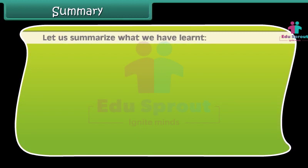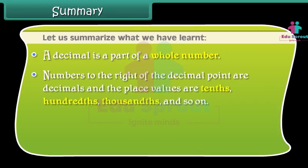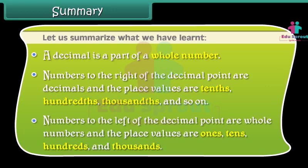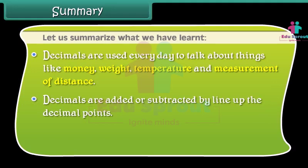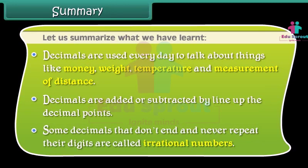Let us summarize what we have learned. A decimal is a part of a whole number. Numbers to the right of the decimal point are decimals, and the place values are tenths, hundredths, thousandths and so on. Numbers to the left of the decimal point are whole numbers, and the place values are ones, tens, hundreds and thousands. Decimals are used every day to talk about things like money, weight, temperature and measurement of distance. Decimals are added or subtracted by lining up the decimal points. Some decimals that don't end and never repeat their digits are called irrational numbers.